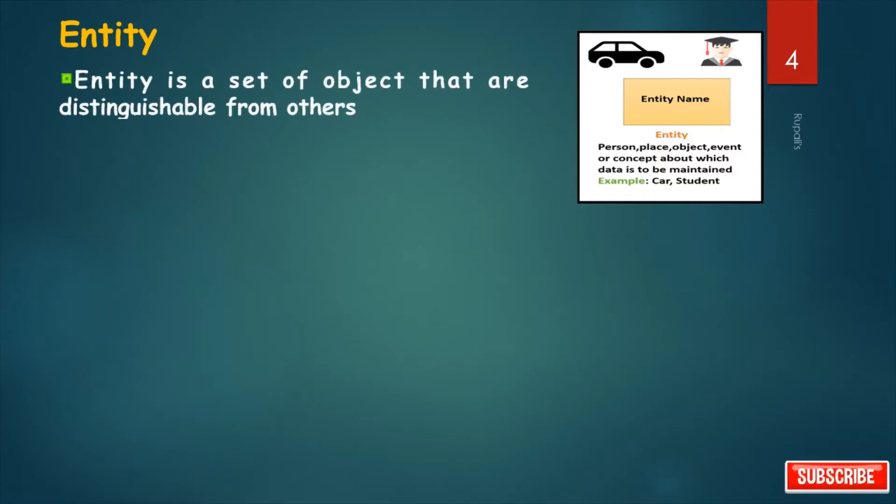An entity is an object or component of data like person, place, object, event or concept about which data is to be maintained, as for example cars, students, etc. Entity is a set of objects that are distinguishable from others. Entity is a thing or object in the real world.